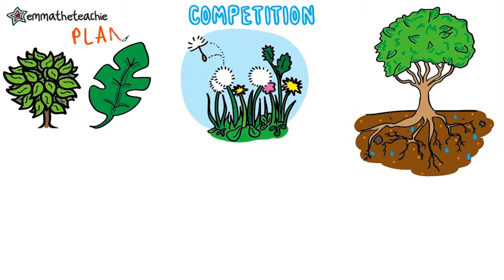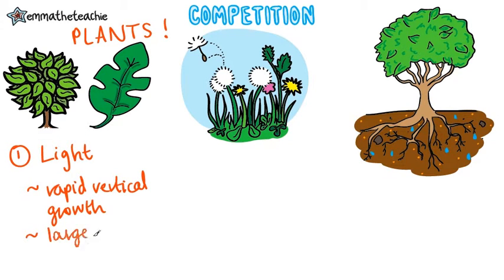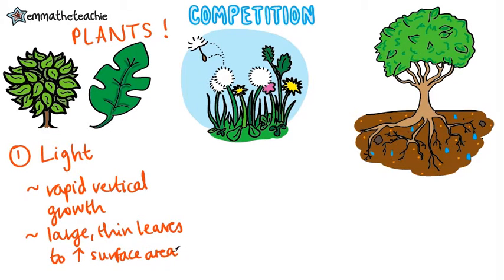Now let's look at plant competition. Plants compete for light, growing as quickly as possible vertically to reach the sunlight, or having large thin leaves to increase the surface area and maximise light absorption.